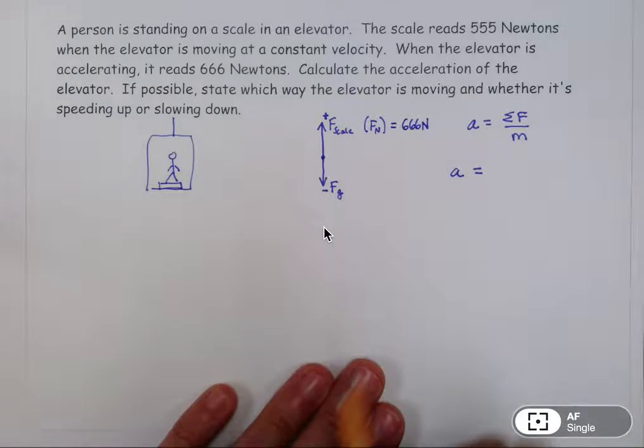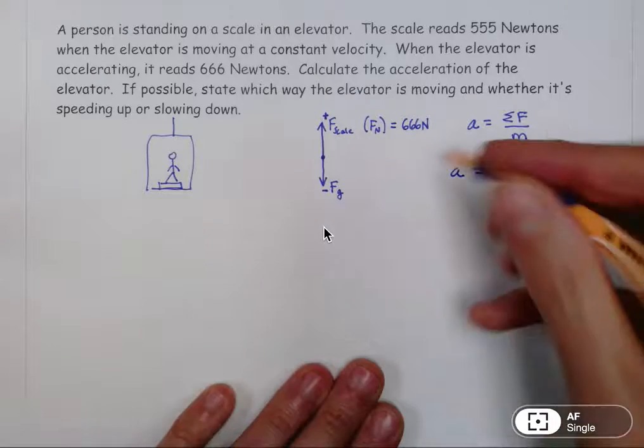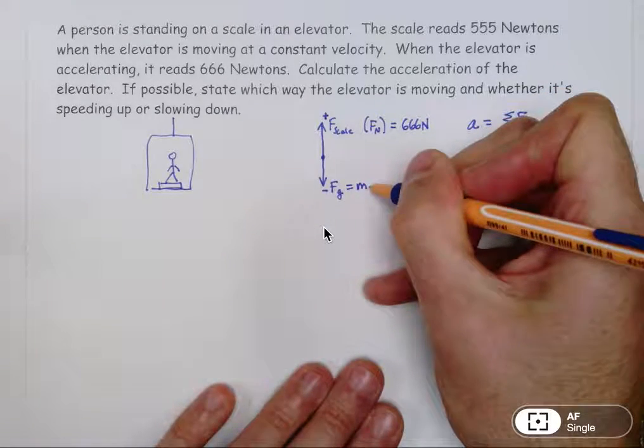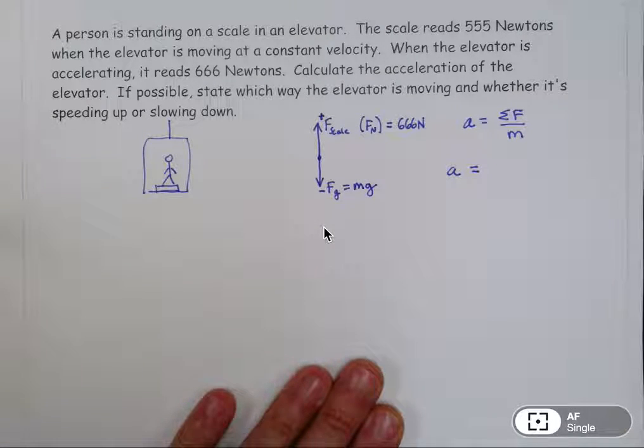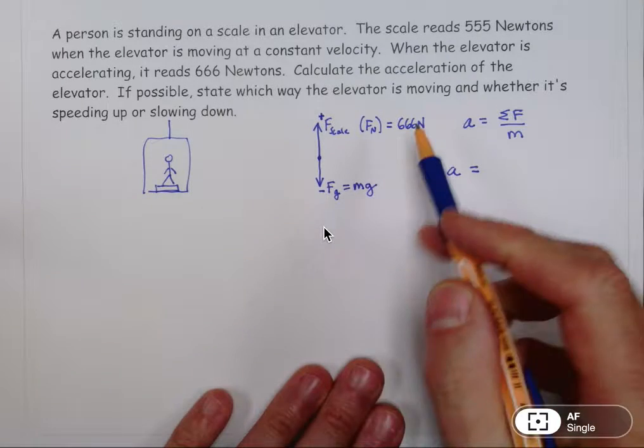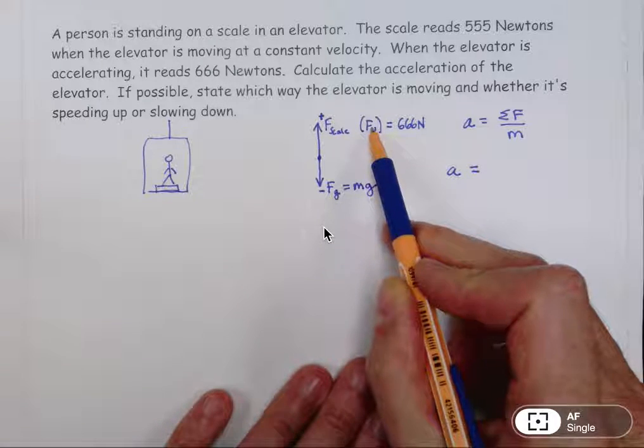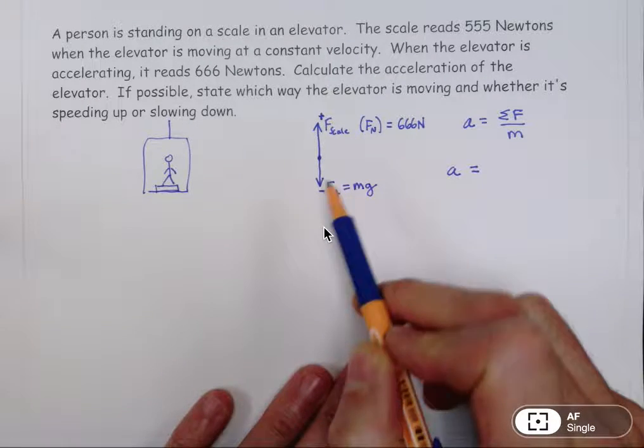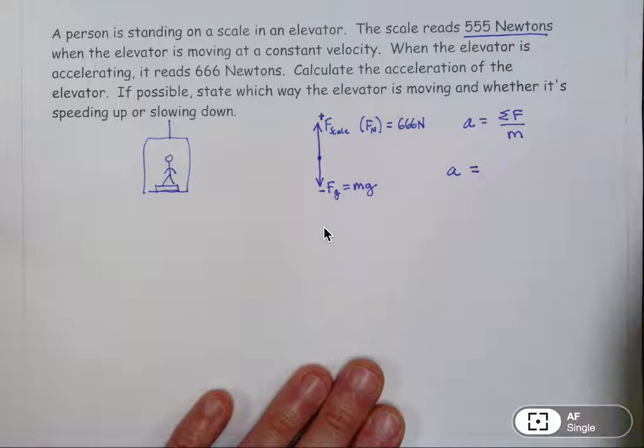Now to solve this problem, we're going to need to know what the force of gravity is. We do have an equation that says force of gravity equals m times g. m is mass. It's measured in kilograms. We don't have the mass. And we can't find the mass with this 666 because that's the normal force. That's not the force of gravity. So sometimes when I'm stuck on a problem, I look back and see is there any information that I was given that I haven't used. And yes, there is. It's this 555 newtons right here.